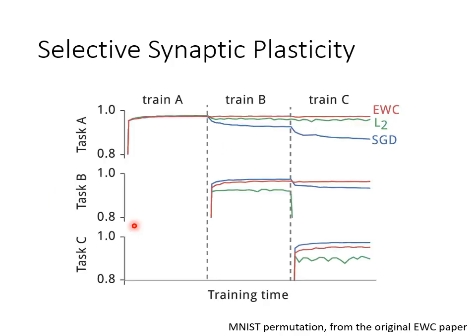Here is a real experimental result from a paper called EWC. The horizontal axis represents the process of sequential training across three tasks A, B, and C — we first train Task A, then Task B, then Task C. There are three vertical axes representing the accuracy of Task A, Task B, and Task C respectively. This allows us to observe how accuracy changes as we sequentially learn all three tasks.